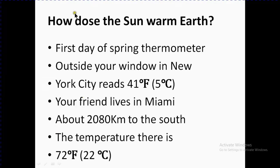Let's start the lesson. How does the Sun warm Earth? First of all, we know that the first day of spring, a thermometer outside your window in New York City reads 41°F or 5°C. Your friend lives in Miami, about 2,080 kilometers to the south. The temperature there is 72°F or 22°C.